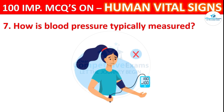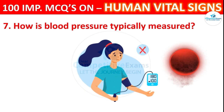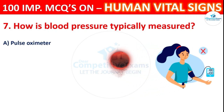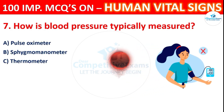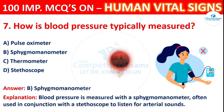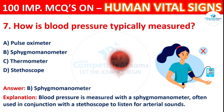Question 7: How is blood pressure typically measured? Options: pulse oximeter, sphygmomanometer, thermometer, or stethoscope. The correct answer is B, sphygmomanometer. Blood pressure is measured with a sphygmomanometer, often used in conjunction with a stethoscope to listen for arterial sounds.